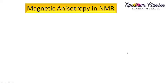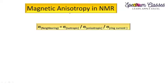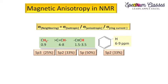Hello everyone, welcome back to Spectrum Glasses. This is another video on the topic of contribution towards the shielding constant by neighboring groups. In this video we are going to discuss magnetic anisotropy in NMR, which seems to be a little difficult for students to understand, because many have questions about why we place the acetylene molecule parallel to the B0 field and why we place the benzene ring or the alkene molecule perpendicular to the B0 direction.